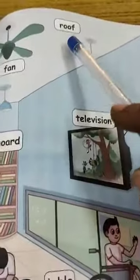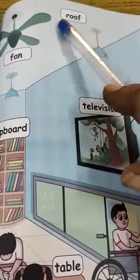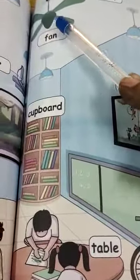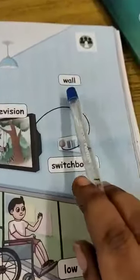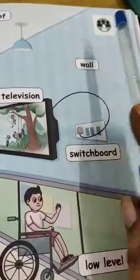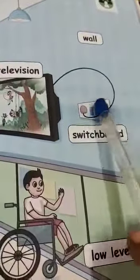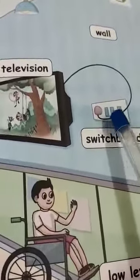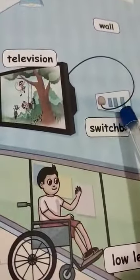In a similar way, the right side also, you can see. What is this? Roof — that is the ceiling. This is a fan — all of you know that very well. And this is a cupboard. This is a television. This is a wall. And this is a switchboard — always be careful touching the switchboard; with your wet hand, you should not touch it.